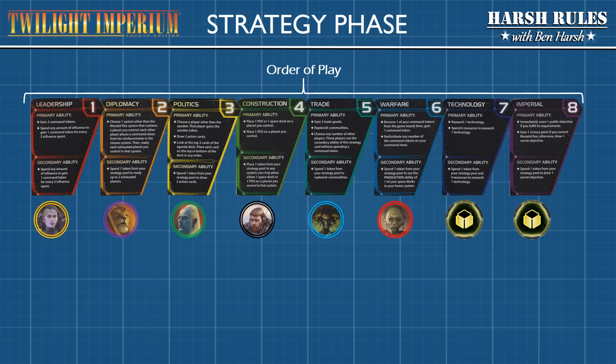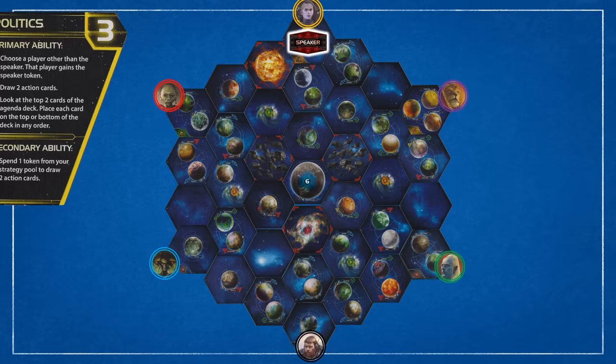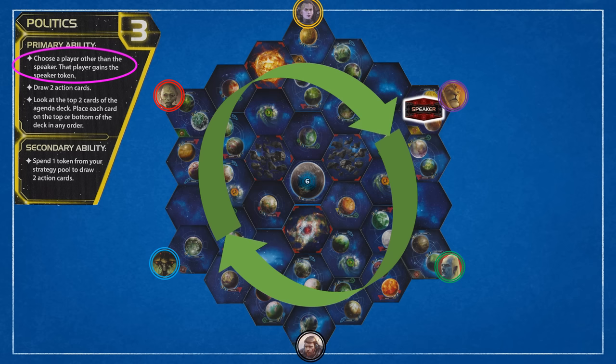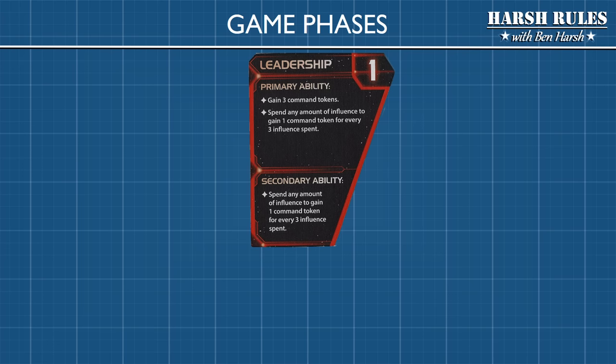It's important to note that later strategy phases will have a different order of play established by a strategy card. The player that selects politics, strategy card number three, has a primary ability that allows them to choose the next speaker. One of the advantages to being speaker is that you go first in the selection process, and then the order of play follows a clockwise pattern around the game board. In this example, let's say that the Mintac player selects the Hakan player to be the next speaker. During the next strategy phase, the selection process would begin with the Hakan player and move around the game board clockwise. Now let's walk through all eight strategy cards.